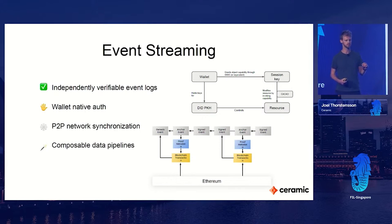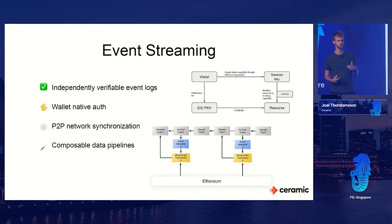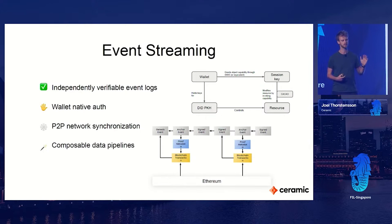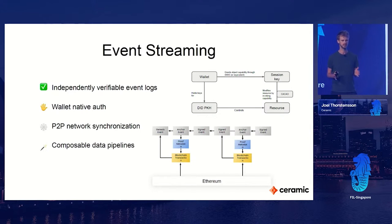The event streams themselves are made up as you can see in the data structure on the bottom right. You have a genesis event that creates the event stream, then anchor events which timestamp things into the blockchain - proof is essentially a vector commitment that a previous event was published at some point in time with proof on the blockchain. Then you can make signed events containing payload information and make updates to your data structures. All of this data structure is stored in IPLD, which is the underlying data schema for IPFS and Filecoin, so it natively interacts with both.